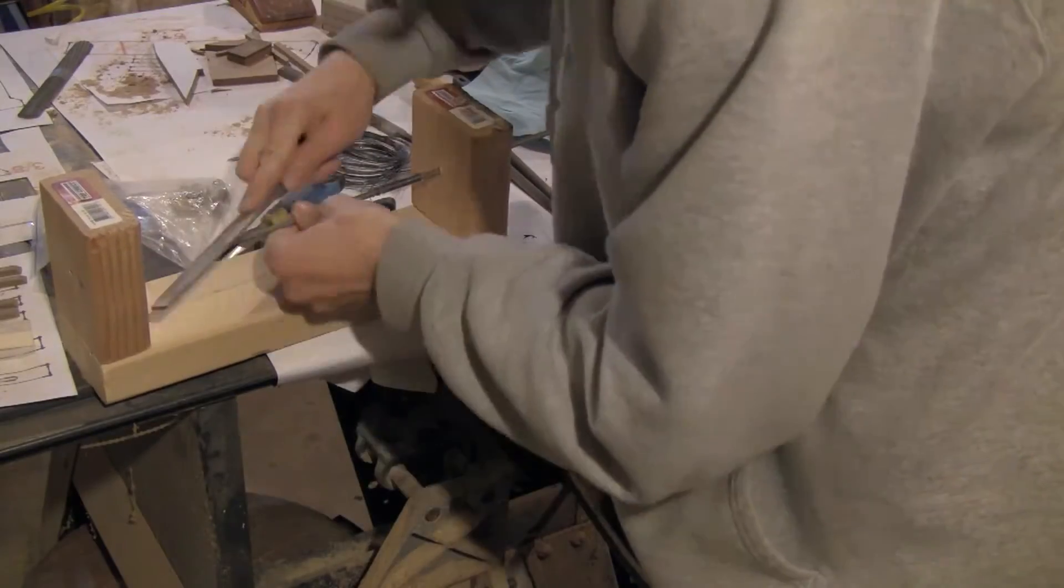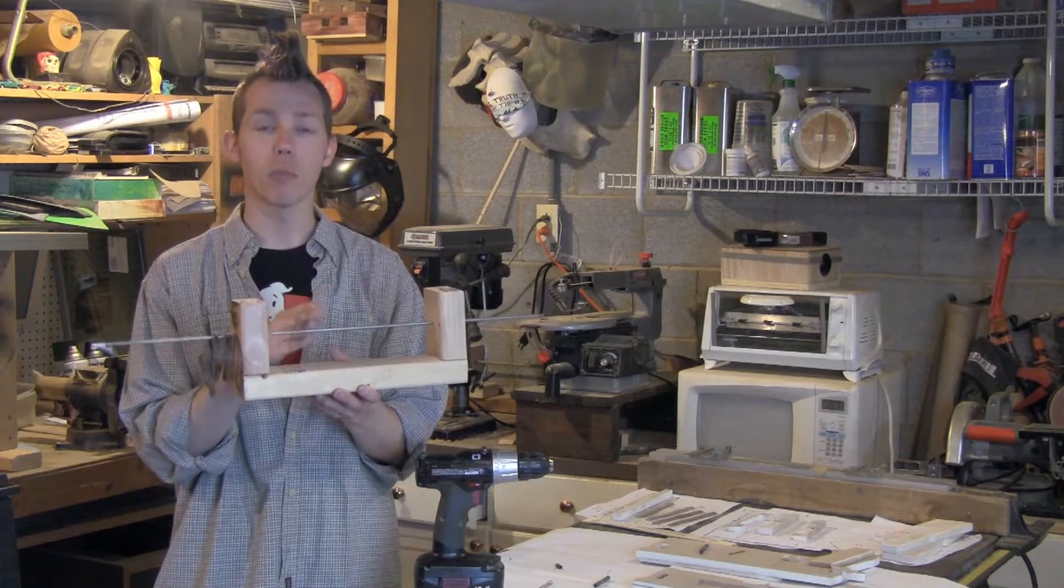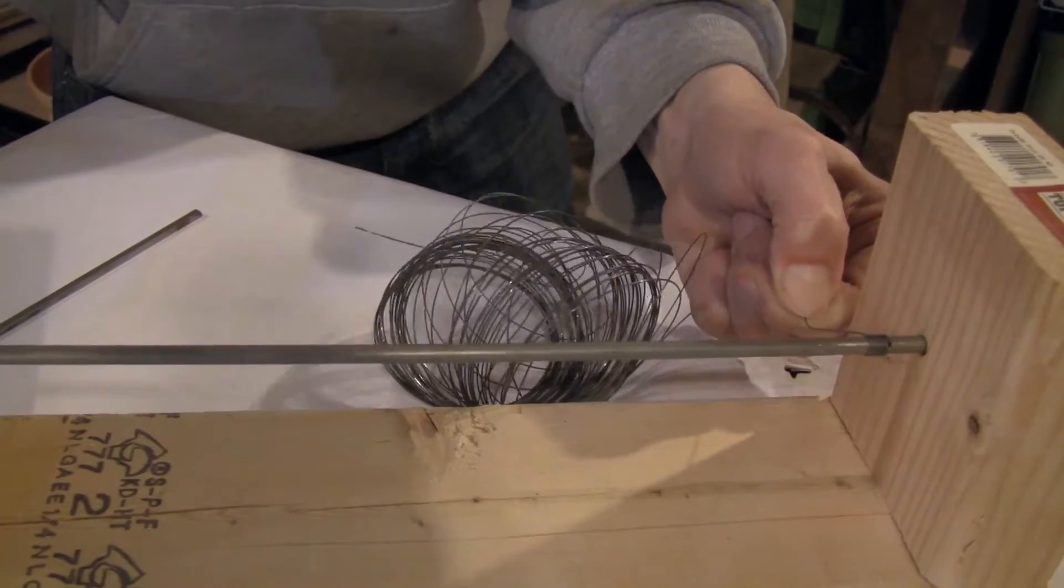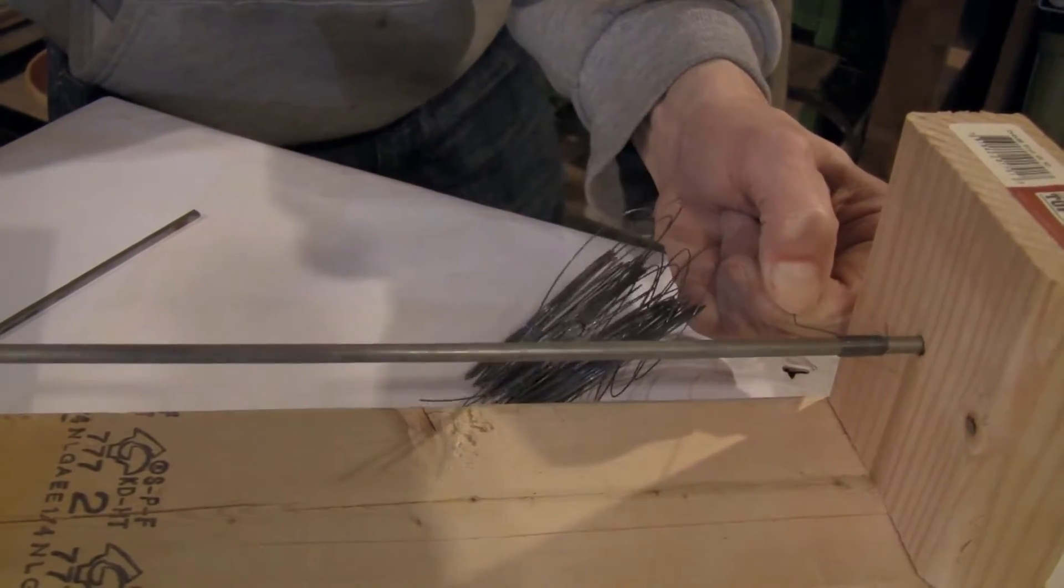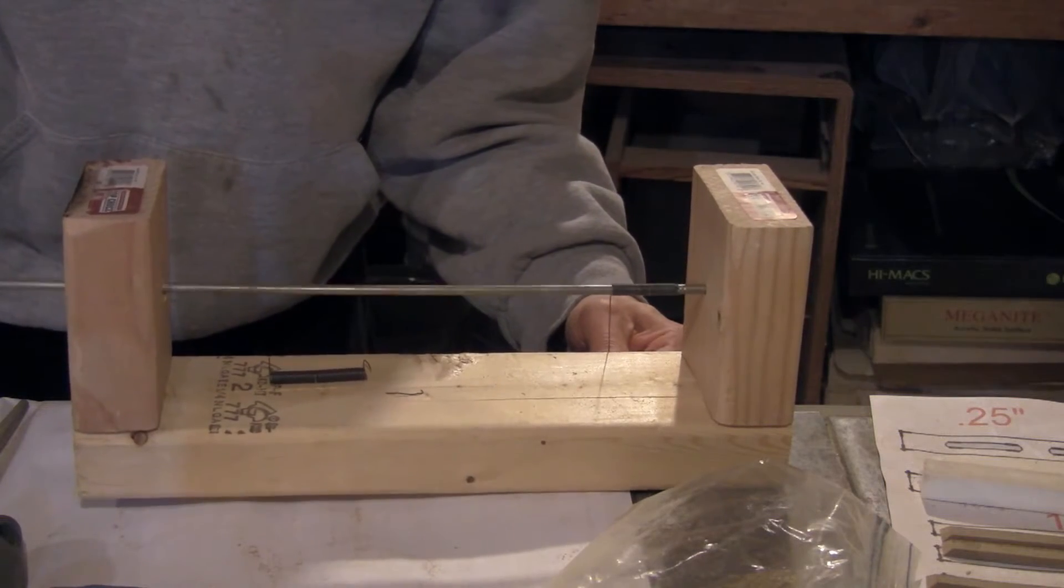I filed one end down just to smooth it out. To make an expansion spring, you want the coils as tight together as possible. Stick one end of the metal wire in the hole you drilled in the metal rod, and then you just start pulling the wire. Just go really slowly. The quicker you go, the more likely you are to just cross through the coils.